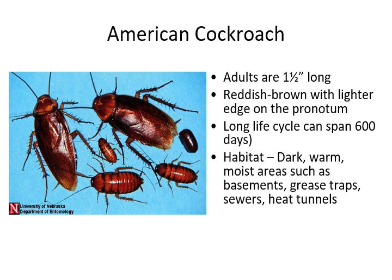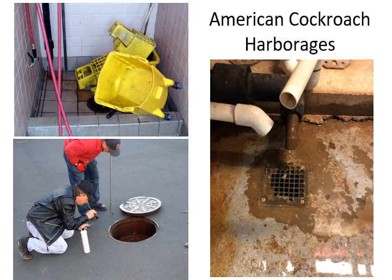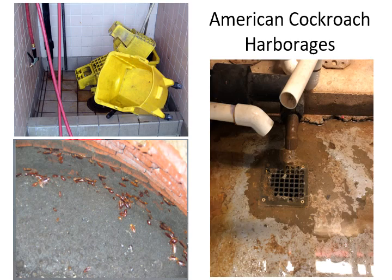Here are some typical American cockroach habitats. A sewer tunnel on the NC State campus, when opened, is loaded with American cockroaches — that's exactly the kind of habitat they love. They can also come up through floor drains and plumbing pipes attracted to water, and are drawn to mop buckets with standing water. The close-up shows just how densely they can occupy a sewer tunnel.